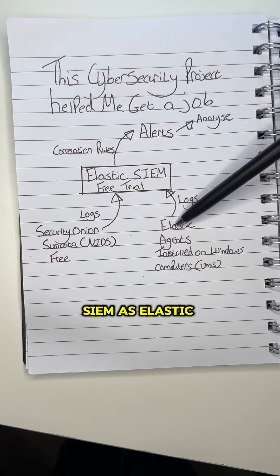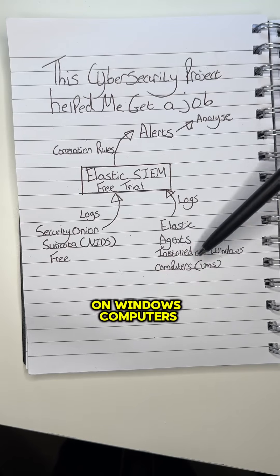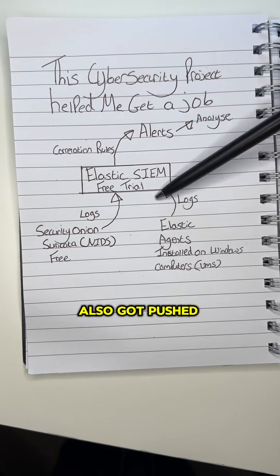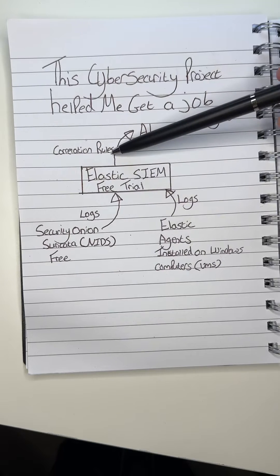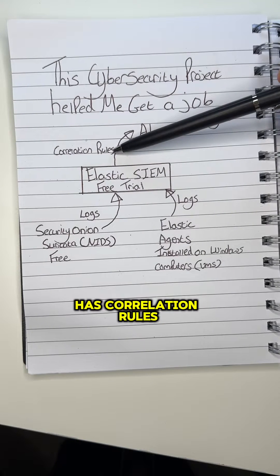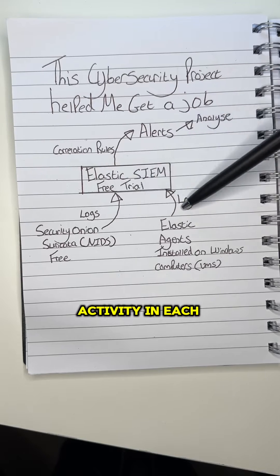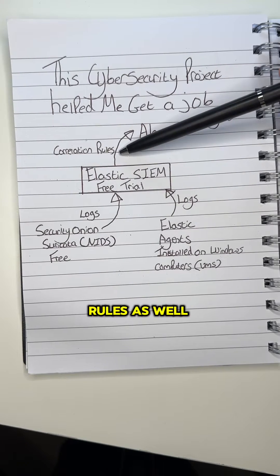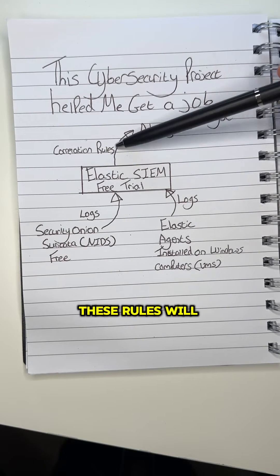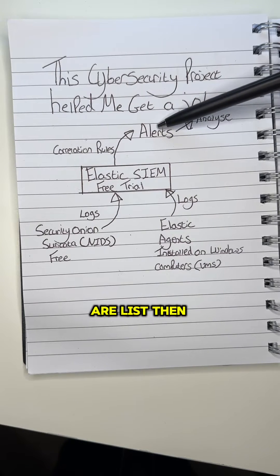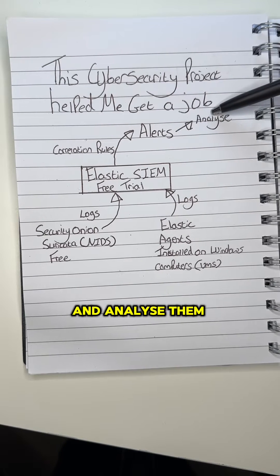Elastic SIEM has Elastic Agents, which I installed on Windows computers using virtual machines, and those logs also got pushed into Elastic SIEM. Elastic SIEM then has correlation rules, which are predefined in an attempt to detect malicious activity in each of these logs, or you can create your own rules as well. These rules will then generate alerts, and these alerts can be analysed, just as a cybersecurity analyst would.